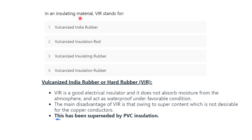Next question: in insulating materials, VIR stands for — and VIR stands for vulcanized Indian rubber. VIR is a good electrical insulator, does not absorb moisture from the atmosphere, and acts as a waterproof material under favorable conditions. The main disadvantage of vulcanized Indian rubber is its sulfur content, which is undesirable for copper conductors, and it has been superseded by PVC insulation.